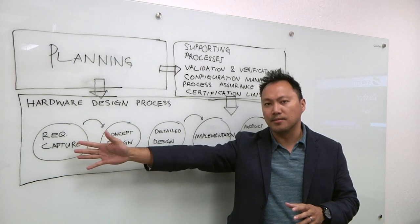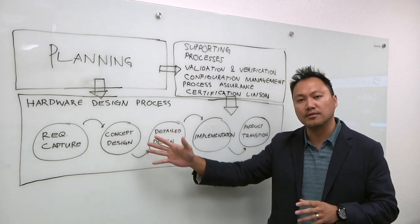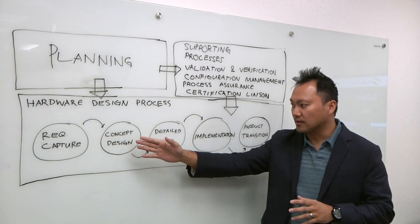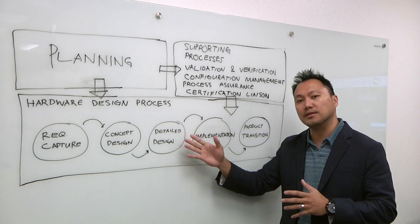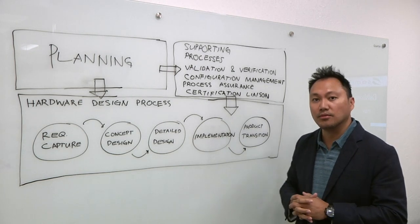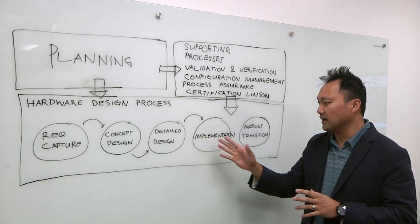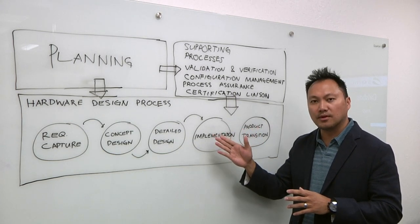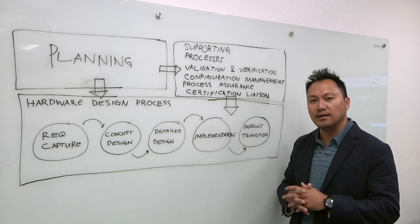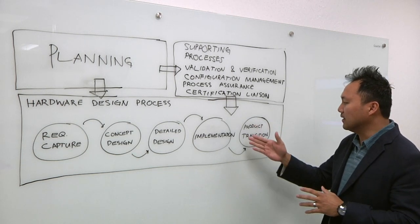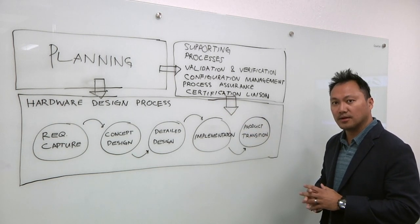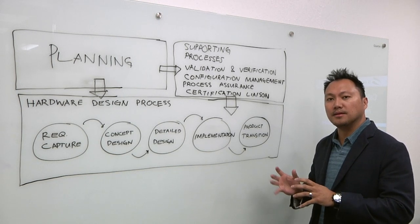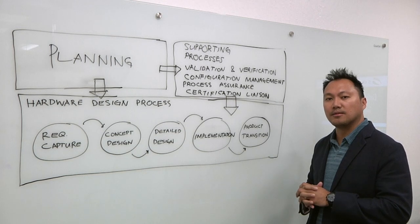You start from requirements capture, then based on the requirements you conceptualize the design — the top-level hierarchy architecture. When you finish with the conceptual design, you proceed to the detailed design, which entails development of the HDL code. Then there's the implementation sub-process, which is synthesis and place-and-route — making sure those tools do not over-optimize or insert any unintended features into the design. The final sub-process in the hardware design process is product transition, which establishes the baseline so that you can replicate the PLD later in the project lifecycle.